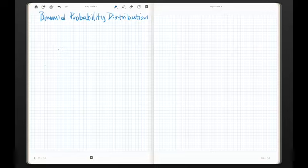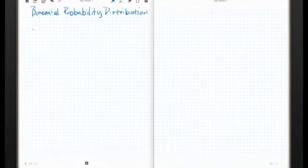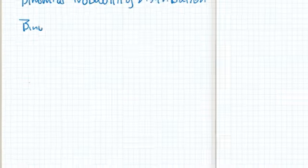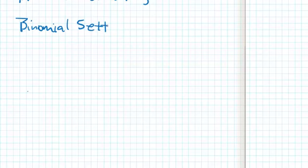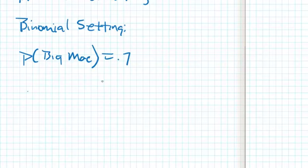The best way to explain this is with a problem. We're going to set up something called the Binomial Setting. Your textbook doesn't refer to it as this — it just gives you the rules — but we're going to call it the Binomial Setting. Let's say that worldwide, the probability of a Big Mac being ordered by a car in a drive-thru is equal to 0.7. We're doing a survey for healthy eating or whatever, and we're going to watch the next 10 cars go through the drive-thru at a randomly chosen McDonald's.